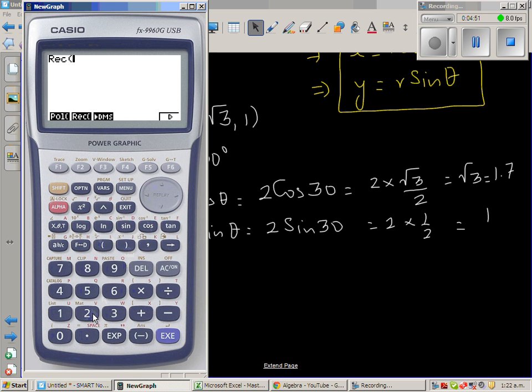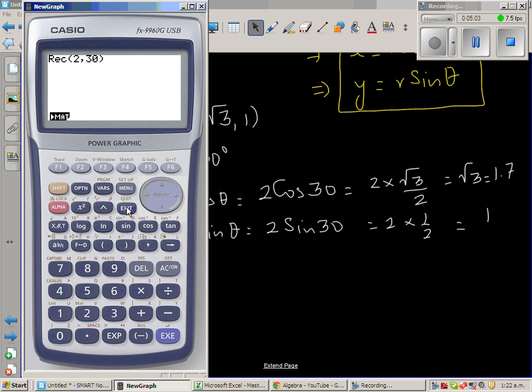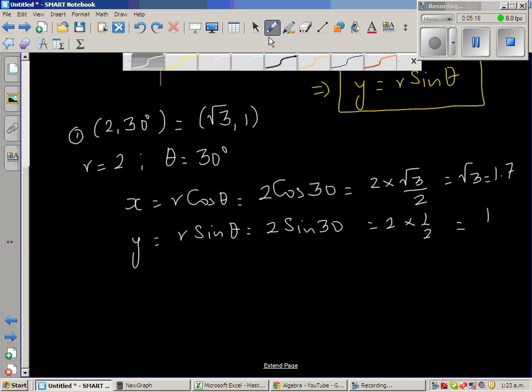You want to change this into rectangular form. So you should type in rectangular form. And then type in the polar form, which is (2, 30°). Now, I have changed the setting. You should always check your setting. My angle is in degrees. If it's in radian, you will have a different answer. So this is the polar form. r is 2 and θ is 30°.